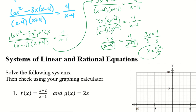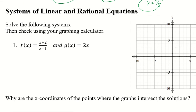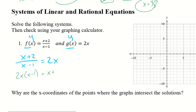Systems of linear and rational equations. We want to solve the following systems and check using a graphing calculator. Since f(x) and g(x) both equal y, and we're finding where they intersect, I can set them equal: x plus 2 over x minus 1 equals 2x. I'll go ahead and cross-multiply.